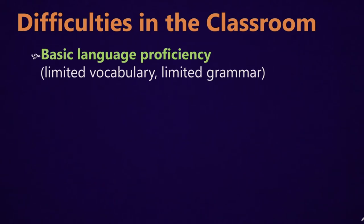First, there is basic language proficiency — that is, they have a limited vocabulary and a limited grammar. Depending on how long someone has lived in an English-speaking country or how long they've been learning English, they're probably going to have a vastly smaller vocabulary than any native speaker. For example, if they've been living in the United States for only one or two years, they're probably only going to have a vocabulary of 2,000 to 4,000 words. If they've been living here longer, maybe up to 10,000 words.